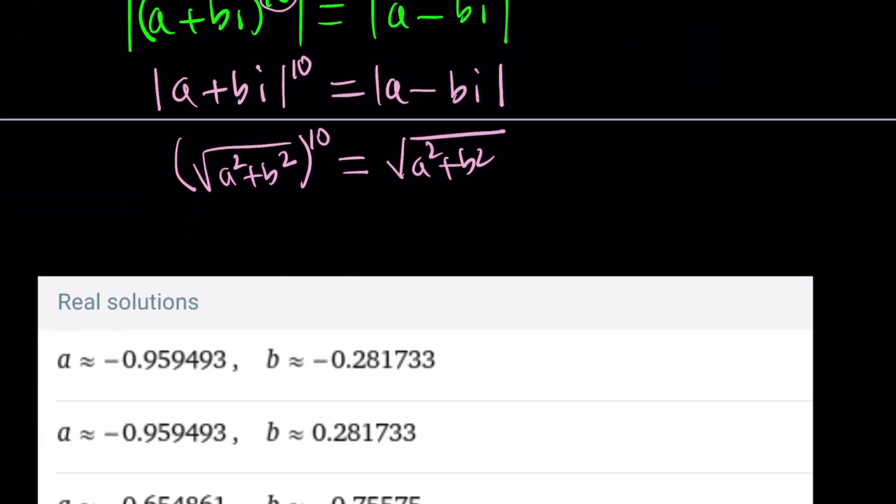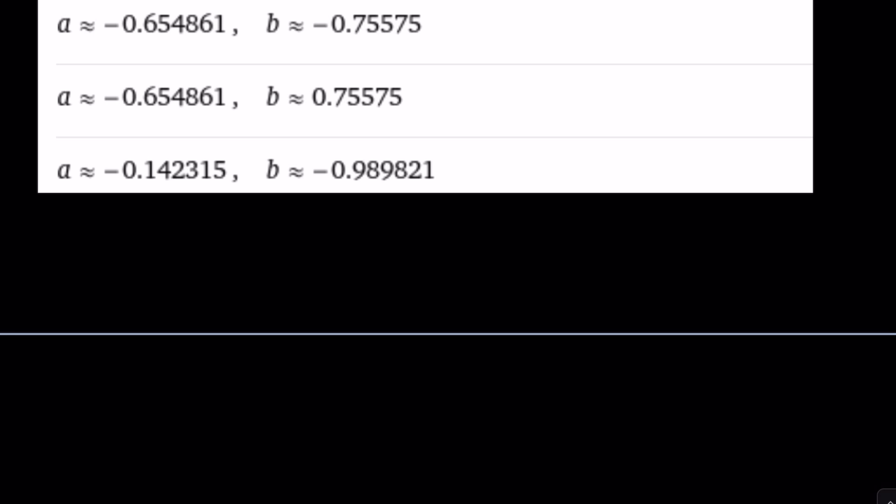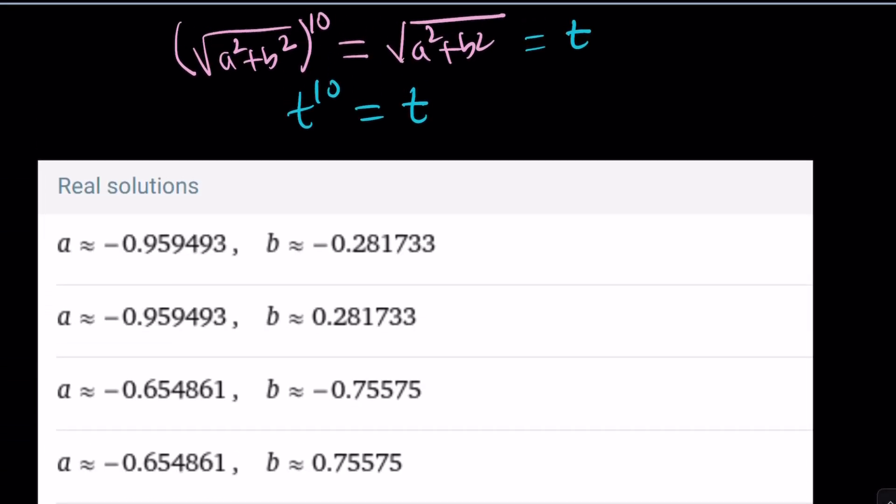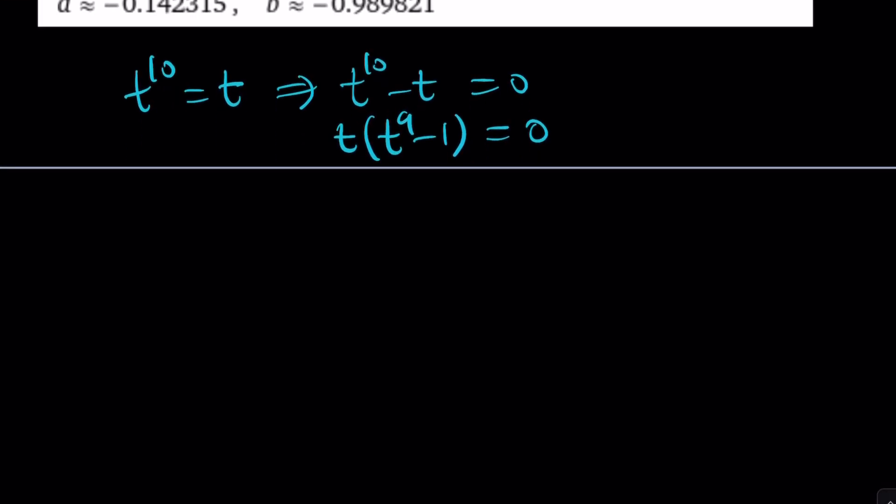Notice that the square root of a squared plus b squared repeats. So let's go ahead and call that t. And now I'm getting t to the tenth equals t. How do you solve that equation? Obviously, you can divide both sides by t, but you're going to lose solutions. So let's subtract t from both sides and factor out a t. You're going to get this. And by setting each equal to 0. By the way, t is real. We're not going to be dealing with the ninth roots of 1. We're not going to go into roots of unity here.